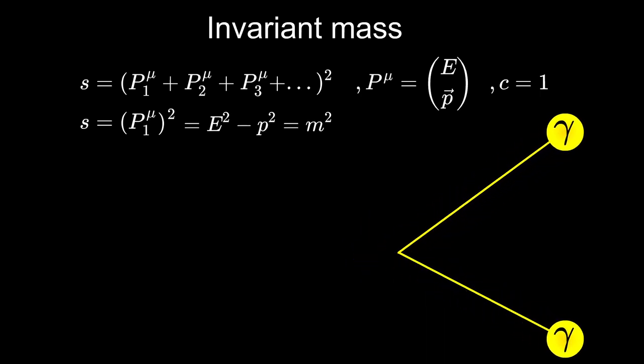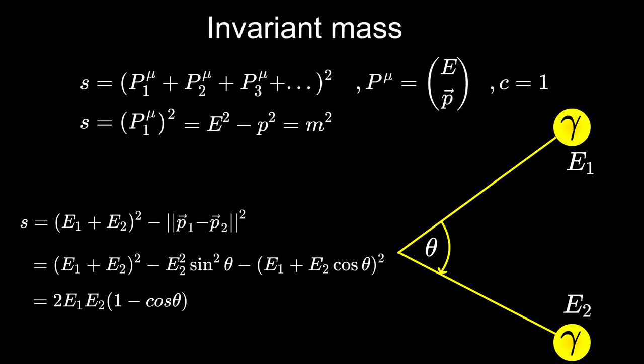If the particle decays into two other particles, then based on their energies, momentum and the angle between them, you can calculate the invariant mass of this two particle system. And in the case of Higgs boson, you would get 125 GeV.